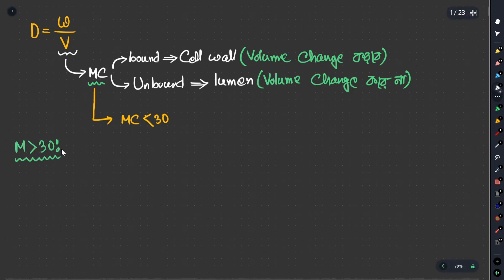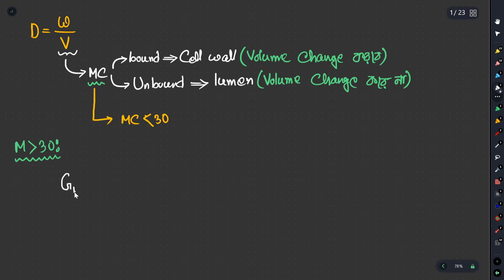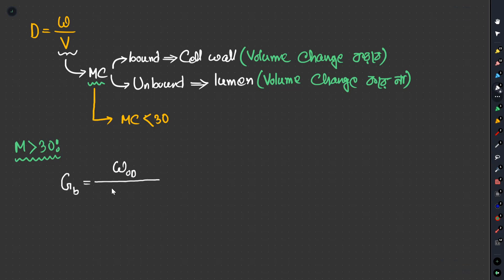If moisture content is greater than 30, we have specific gravity. We have basic specific gravity and green specific gravity. If we have green specific gravity, we have a freshly felled condition. We have a formula to define green specific gravity. In this region, we are using water, and if moisture content is above that area, we have volume associated with it.